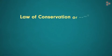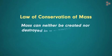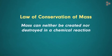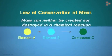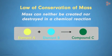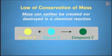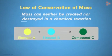Antoine Lavoisier put forth the law of conservation of mass. It states that mass can neither be created nor destroyed in a chemical reaction. He explained this law by saying that matter is formed from pre-existing matter, and the mass of the newly formed matter will be the same as that of the pre-existing matter. We can neither create new matter nor destroy the existing matter.